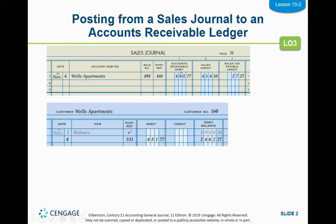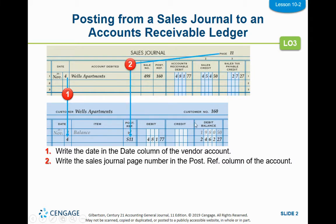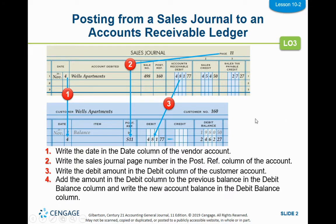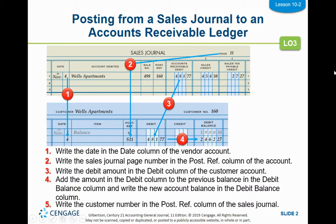These two columns you're going to post the totals. So you would post Wells Apartment — you do the date, you do the sales journal number. Since we have multiple journals now, you have to put an S for sales journal and the page number. You're going to put the accounts receivable debit — you know it's a debit because it says debit right there. It has a debit balance, so you add them together for your new balance, then go back to your sales journal and put that customer number in the post reference. You're going to do that for every line of your sales journal.